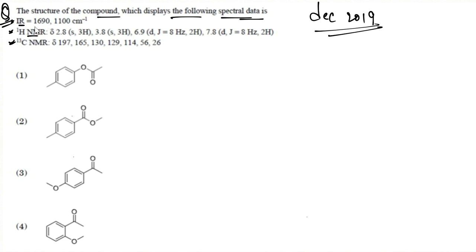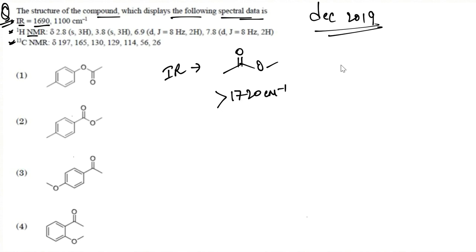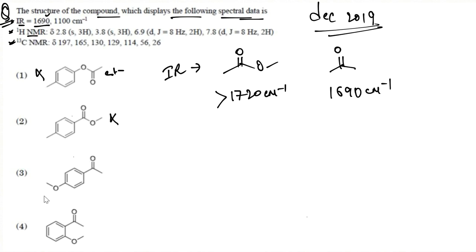The IR value is 1690 cm⁻¹. In IR spectroscopy, an ester would have a value higher than 1720 cm⁻¹, so 1690 cannot be an ester — it can only be ascribed to a ketone. This immediately rules out options 1 and 2, which contain esters. Options 3 and 4 contain a ketone group and an ether.